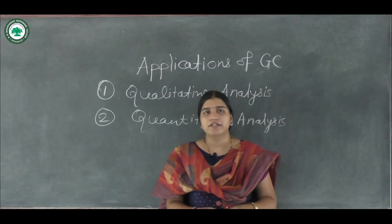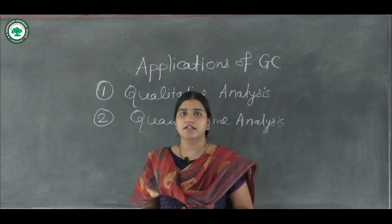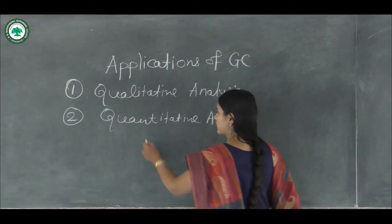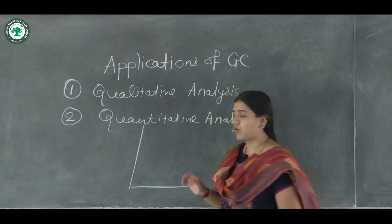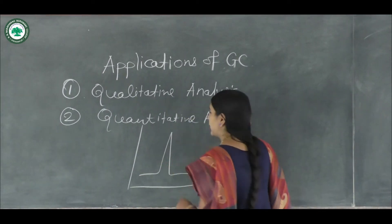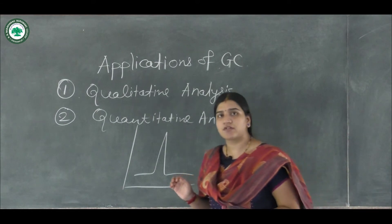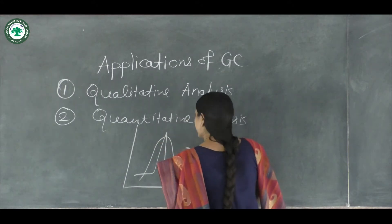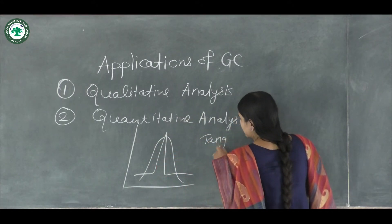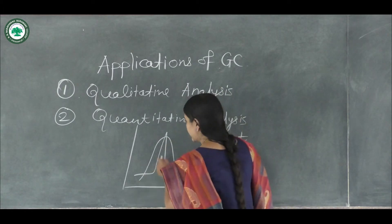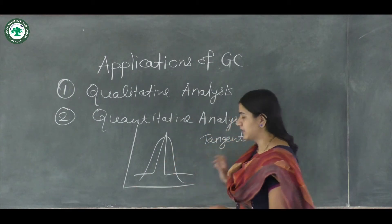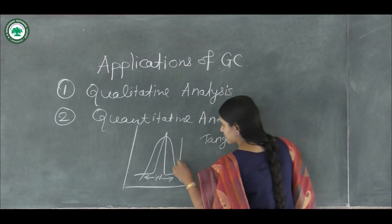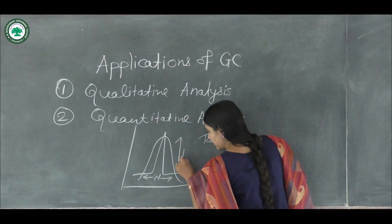For quantitative analysis using gas chromatography, you use the triangulation process. Triangulation process means: if you have obtained a chromatogram on a recorder, you will draw tangents to the well-developed chromatogram. The width and the height of the chromatogram are identified from these tangents.